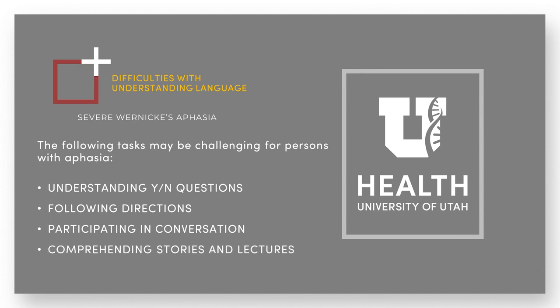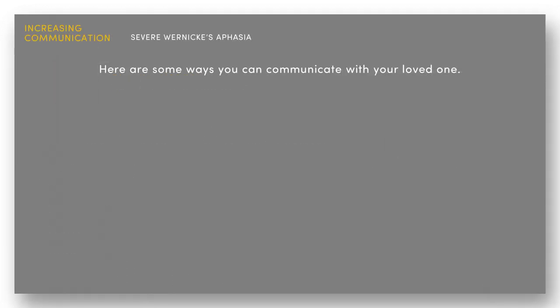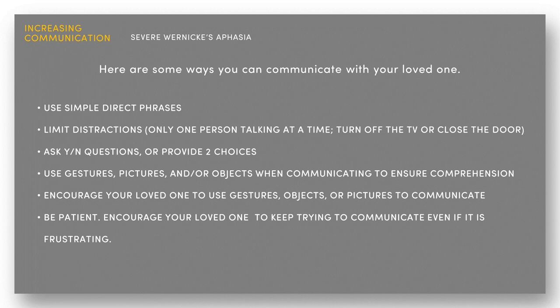The overall goal is to increase communication. This can include spoken language and communication via actions and pictures. Here are some tips to help you communicate with your loved one: use simple and direct phrases; limit distractions, with only one person talking at a time; make sure to turn off the TV or close the door; ask yes or no questions or provide two choices; use gestures, pictures, and or objects when communicating to ensure comprehension.